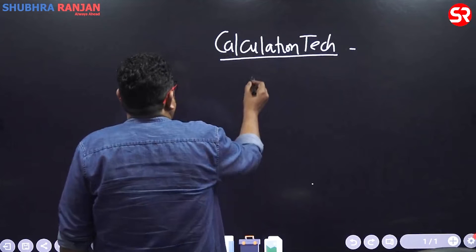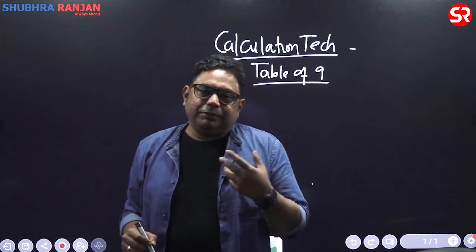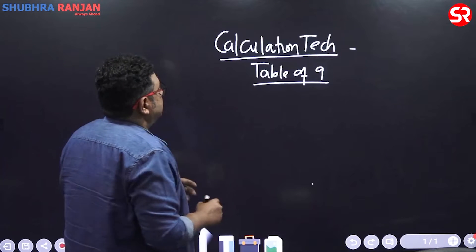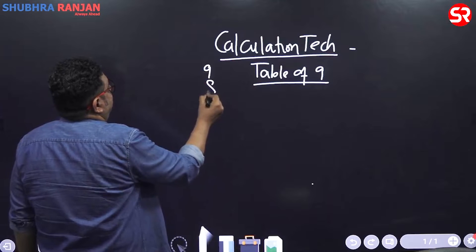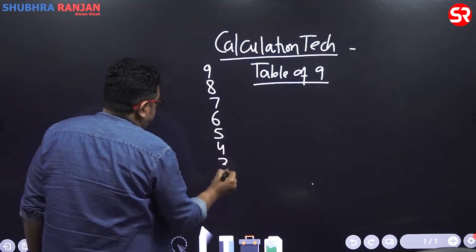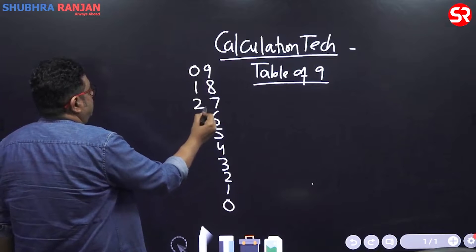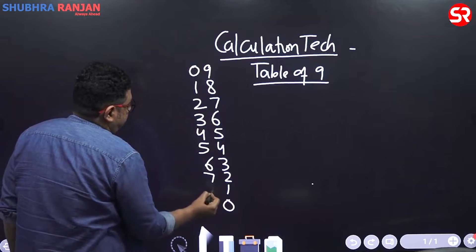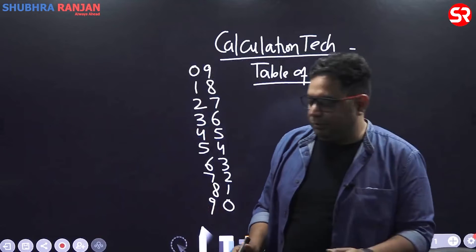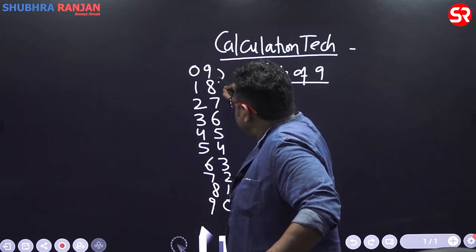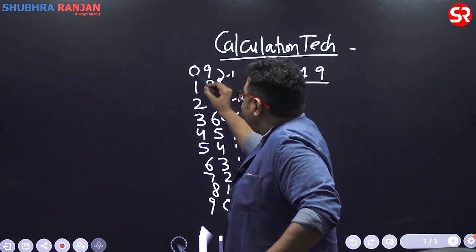Table of 9 gives you a lot of information and many of you might be aware of it. This is table of 9: you start from 9, 8, 7, 6, 5, 4, 3, 2, 1 and 0 on one side, and from the other side start from 0 and go up till 9: 0, 1, 2, 3, 4, 5, 6, 7, 8 and 9. So it starts from 9 on one side and minus 1 each time, and from the other side it starts from 0 and plus 1.